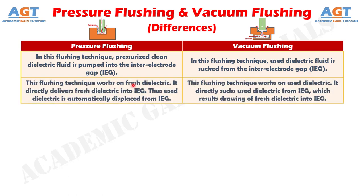Number 2: pressure flushing technique works on fresh dielectric — it directly delivers fresh dielectric into the inter-electrode gap, thus used dielectric is automatically displaced. Whereas vacuum flushing technique works on used dielectric — it directly sucks used dielectric from the inter-electrode gap, which results in drawing of fresh dielectric into the inter-electrode gap.